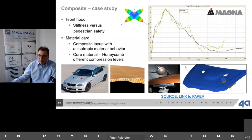Case study: a front hood made of a composite top layer with a honeycomb core. An impact test with a head form shot at the front hood was simulated, and quite good agreement between test and simulation was achieved, showing this approach works well. A link to the paper for closer inspection is provided.